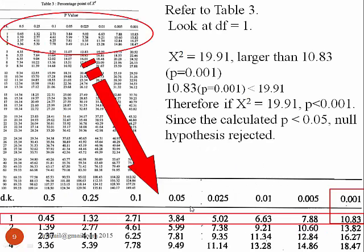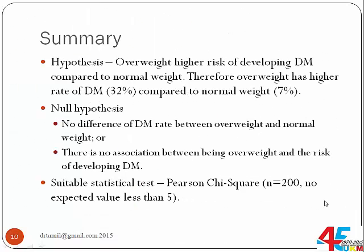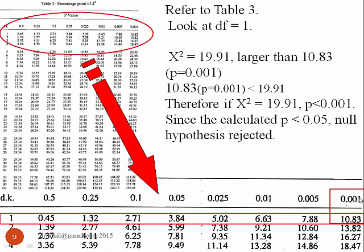Looking at Table 3, the value of 19.91 is larger than 10.83, which is shown at the bottom of the table. Therefore, it is very much more significant than expected. Since the chi-square value corresponding to a p-value of 0.001 is 10.83, and we have 19.91, the p-value is smaller than 0.001.